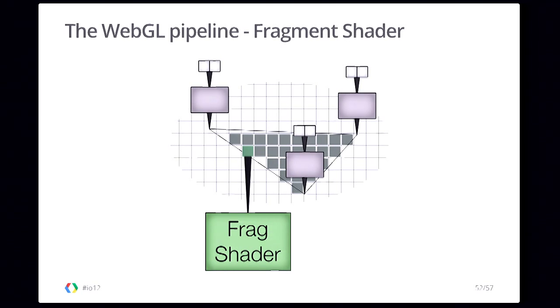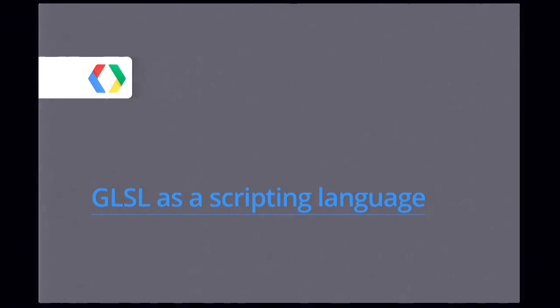Q: For heat maps, is it possible to have multiple points of the same intensity but different colors, or is color always keyed off intensity? A: Color is always keyed off intensity, but each data point can have an additional weight attribute, so you can make one point worth a thousand points and normalize that way.